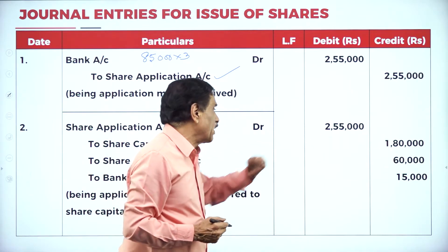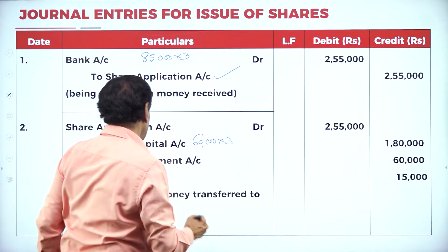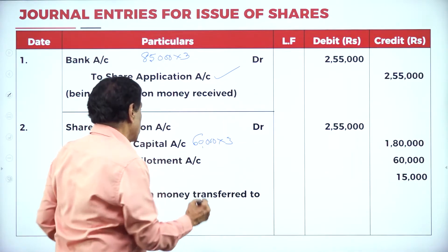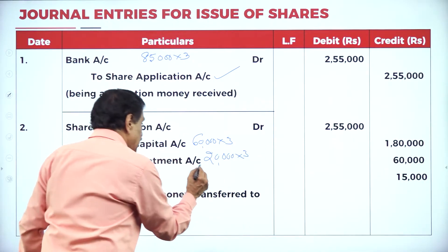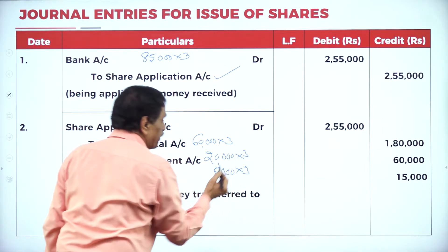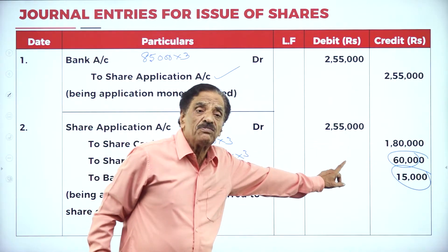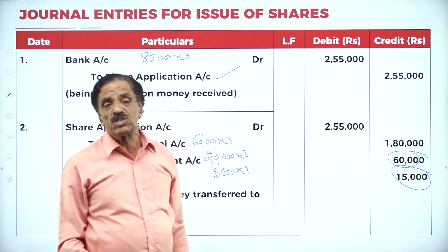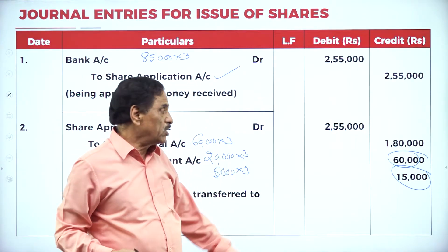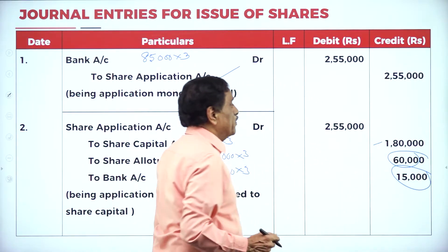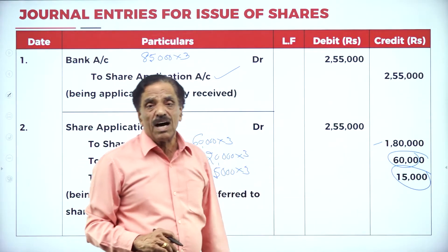Second entry — Share Application Account Dr. 2,55,000. We actually require 60,000 × 3 = 1,80,000 to Share Capital. 20,000 application money adjusted to allotment account: 20,000 × 3 = 60,000. 5,000 applications rejected at rupees 3: 15,000 refunded. So: received 2,55,000; required 1,80,000; adjusted to allotment 60,000; refunded 15,000.